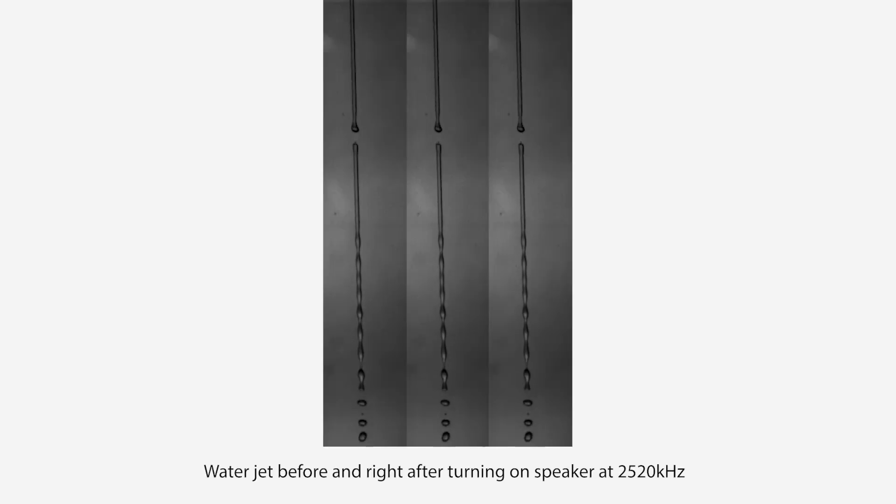With the use of a high-speed camera, we were able to look at what the effect of a speaker on a water jet is. Here we see the effect of a speaker being turned on on a small water jet. When the speaker is turned on, the critical length gets shorter. You can see this as the cutoff point of the droplets moves up.